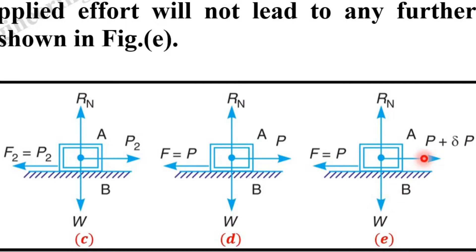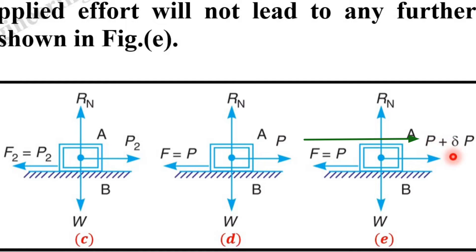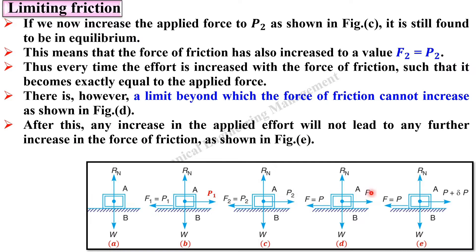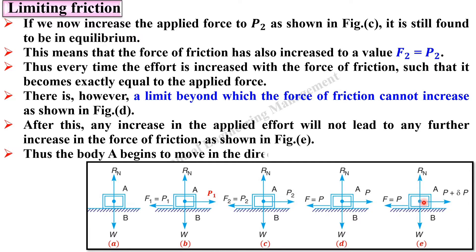If you increase the value of the effort from P to P plus delta P, where delta P is a very small value, the friction will not increase from P to P plus delta P — it remains exactly equal to P only. So the frictional force has a limit equal to P. The frictional force increases from P1 to P2 and up to P, but after that it will not increase. Thus body A begins to move in the direction of the applied force, because the friction force is now less than the applied effort and the body moves to the right.